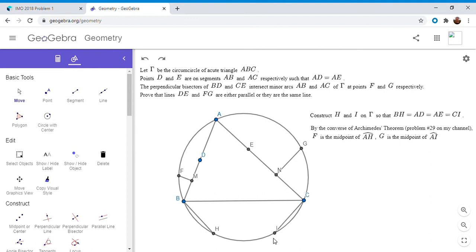There were a lot of other approaches that didn't use Archimedes theorem, but I thought this is just a really interesting application of it. How can we leverage that F is the midpoint of arc AH and G is the midpoint of arc AI?